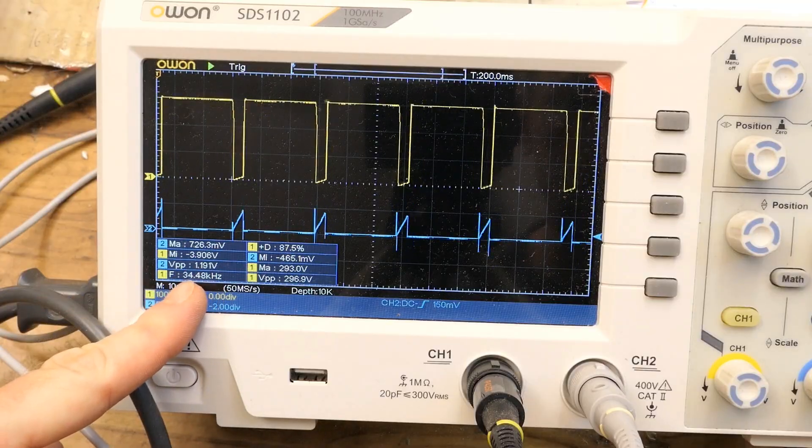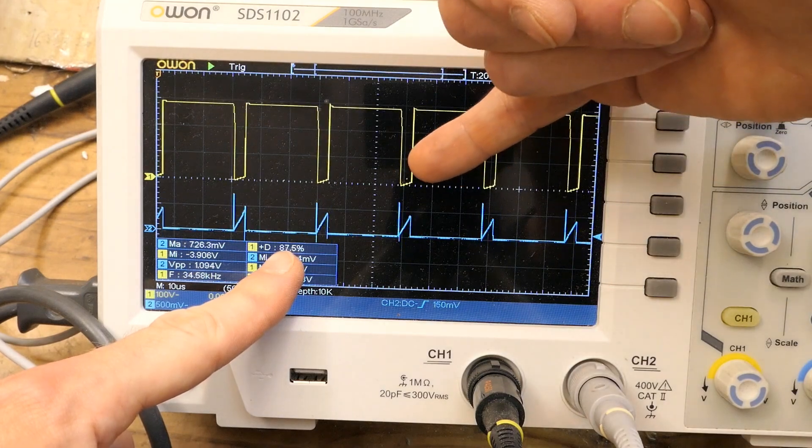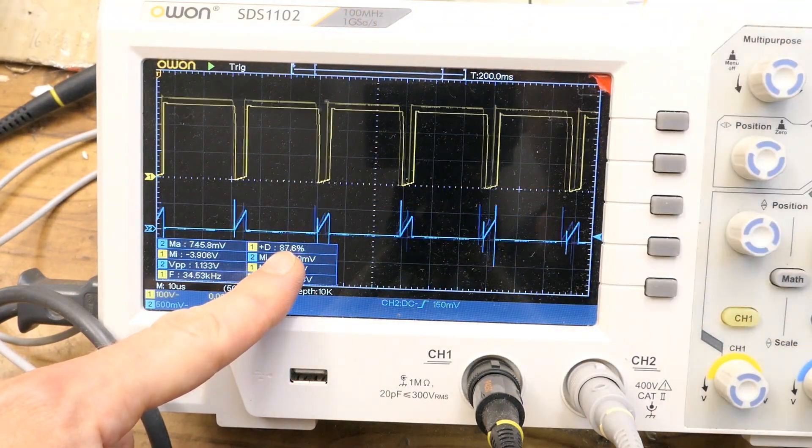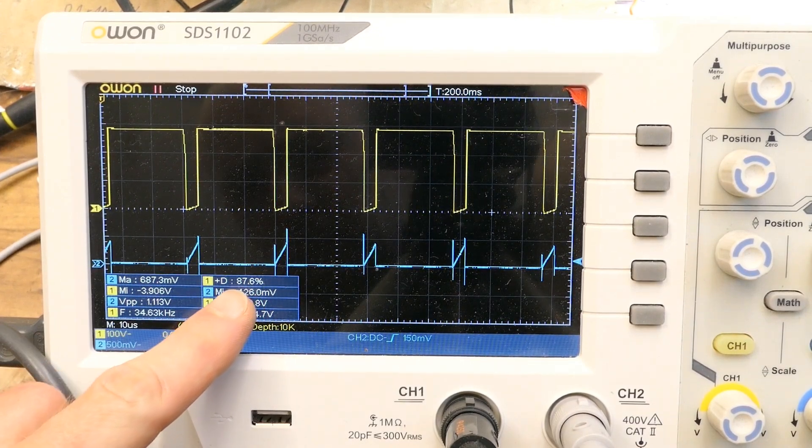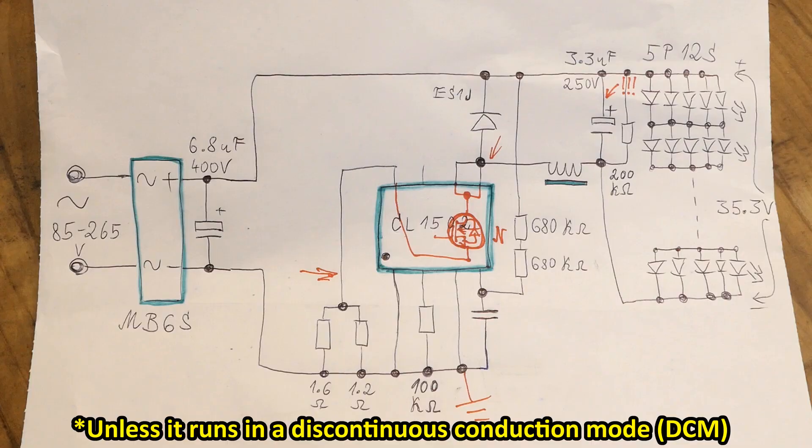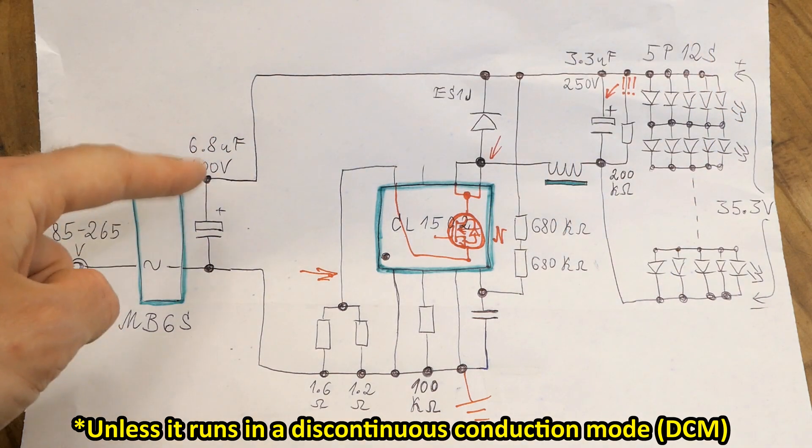And the switching frequency is about 34 kilohertz. And the switching duty cycle is... Well the transistor is on when it's low. So it's the opposite of this. This is measuring the positive duty cycle. So the actual duty cycle is about 13%. And of course the duty cycle correlates to the ratio of the voltage drop of the LEDs and the voltage of the rectified mains.